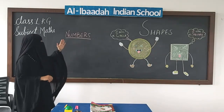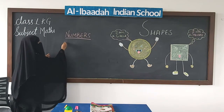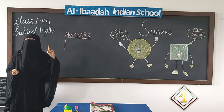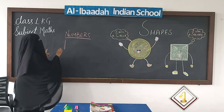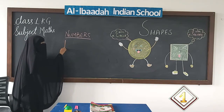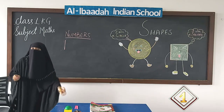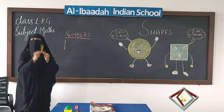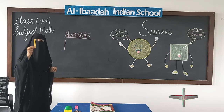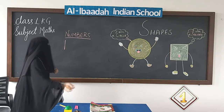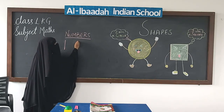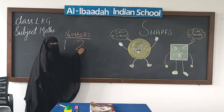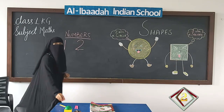Okay, children. Let's learn numbers. One standing line makes the first number 1. A standing line makes number 1. Can you tell me how many sticks do I have here? Number 1. How many sticks? 1. This is number 1. Now, a half curve on a sleeping line makes number 2.